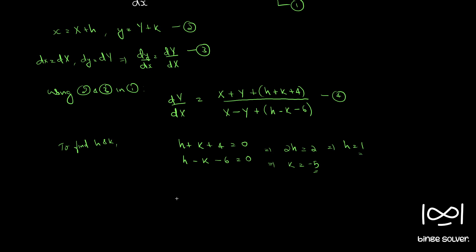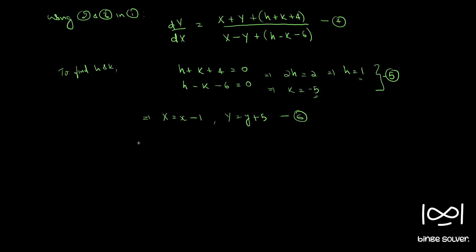From this we know capital X equals x minus h, which is x minus 1 — call this equation 5 — and capital Y equals y minus k, which is y plus 5 — call this equation 6. Using equation 5 in equation 4, we get dY/dX equal to (X plus Y) by (X minus Y), since the constant terms are taken as zero.